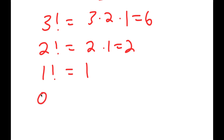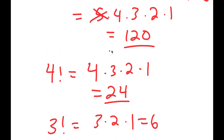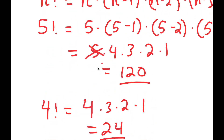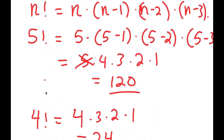Then we reach 1 factorial which is just 1. And finally, if we go one less we get 0 factorial. What do we do here? Because we usually just multiply down until we get to 1, but 0 is already less than 1, so how do we find the value of 0 factorial?